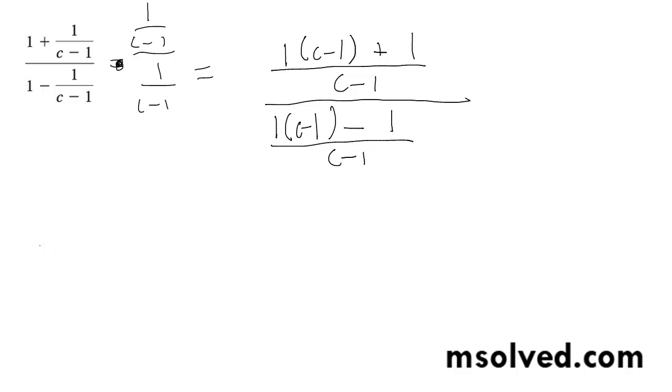Alright, so distributing this, I get c minus 1 plus 1 over c minus 1 times, flipping this, c minus 1 over c minus 1 minus 1, minus 1 minus 1.